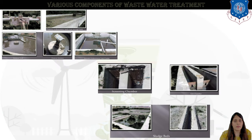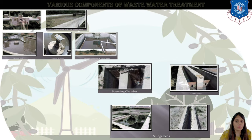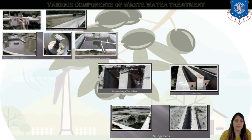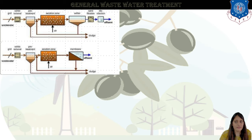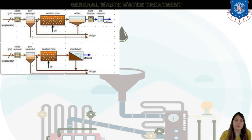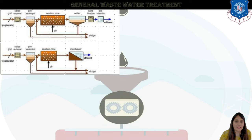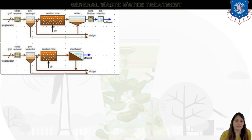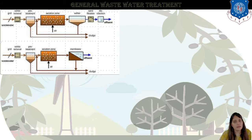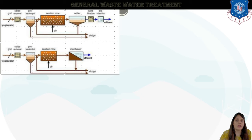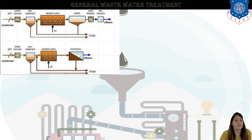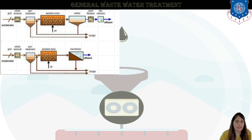This is how wastewater treatment is done — these are the components through which water passes. This is the general wastewater treatment plan. Wastewater enters, then grit and solid removals take place, then there is aeration where air is provided and particles settle into the settler, then the sand filter with filter beds, then disinfectants, and the effluent moves out. The sludge — the residue and leftover portion of the treated water — is very helpful and can even be collected and reused.